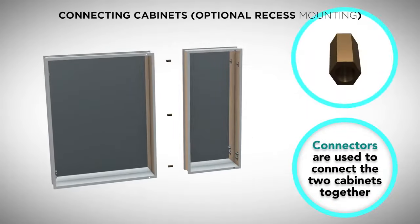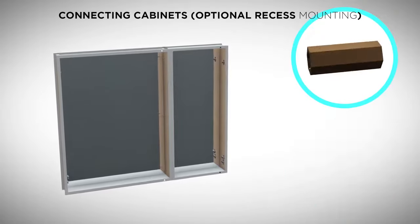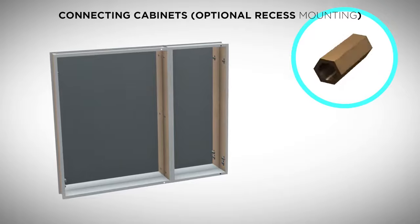Using the connectors provided with the cabinet, attach two cabinets together by pushing the screws through the adjacent walls of the two cabinets and screwing them into the connectors.